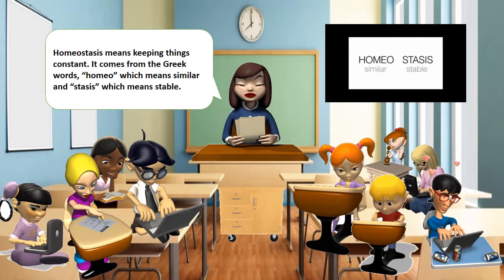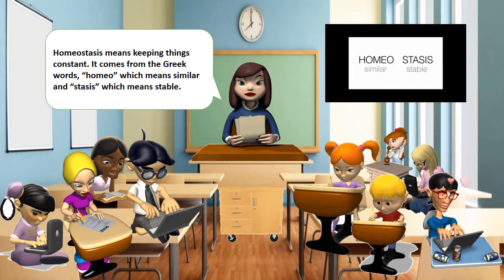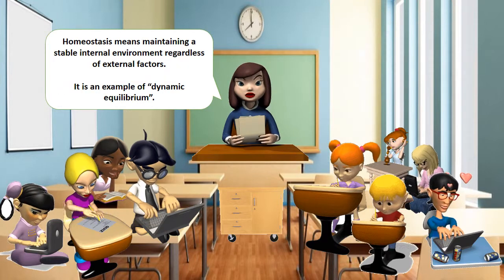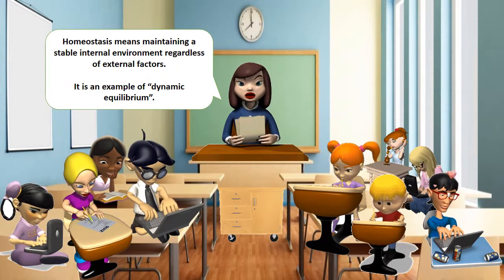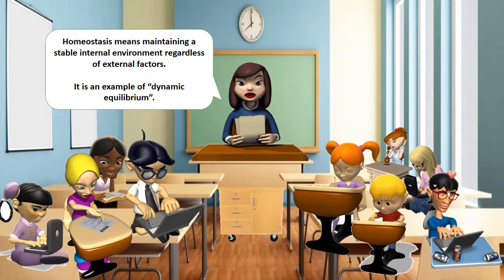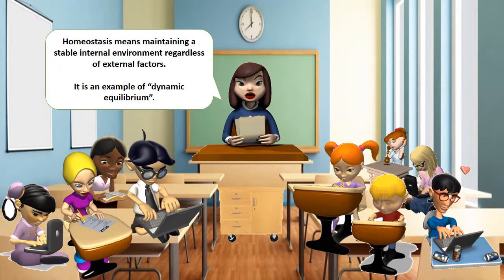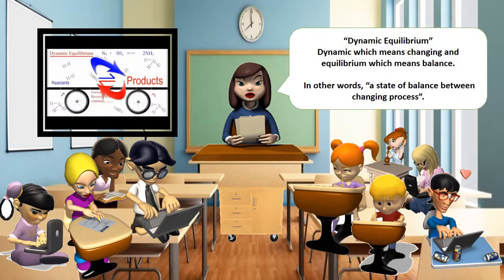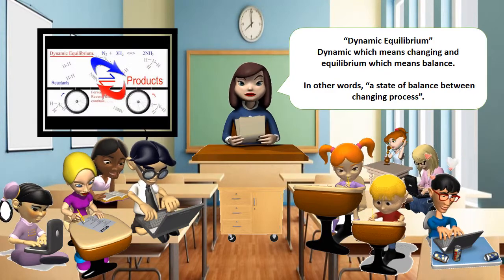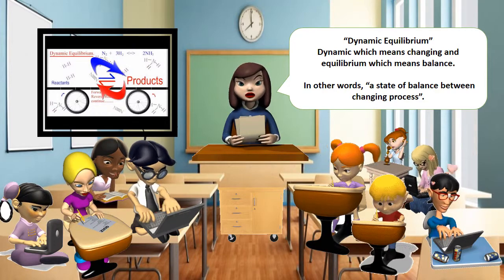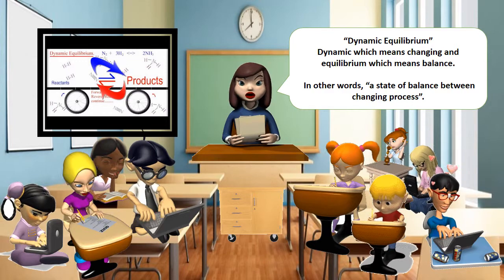Homeostasis comes from the Greek words 'homeo,' which means similar, and 'stasis,' which means stable. Homeostasis means maintaining a stable internal environment, regardless of external factors. It is an example of dynamic equilibrium — 'dynamic,' which means changing, and 'equilibrium,' which means balance. In other words, a state of balance between changing processes.